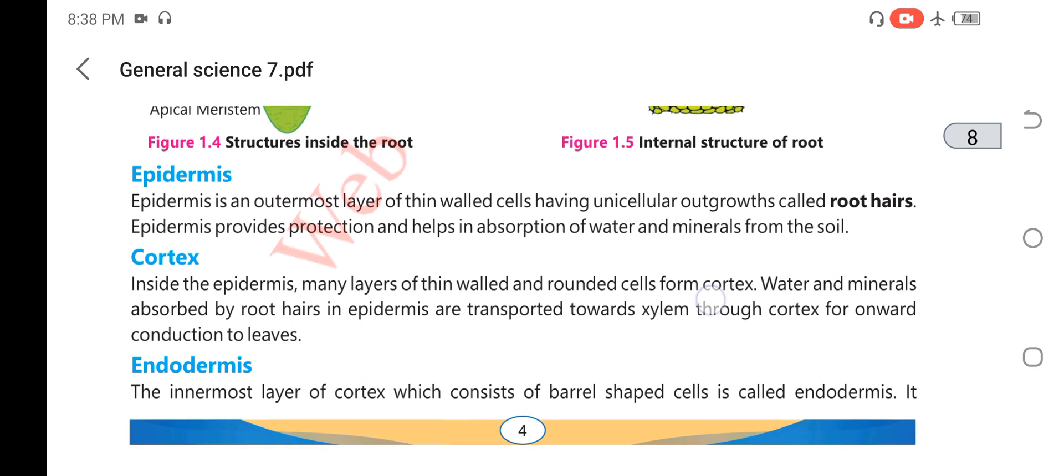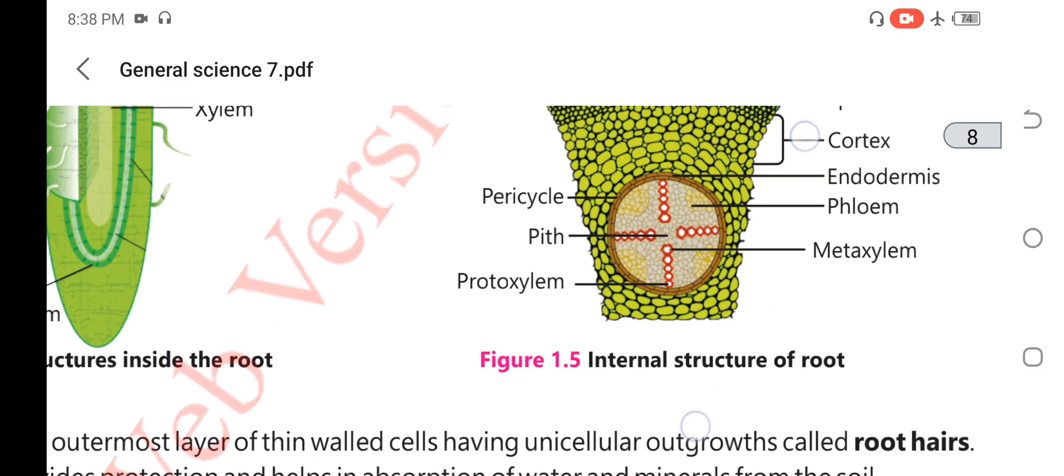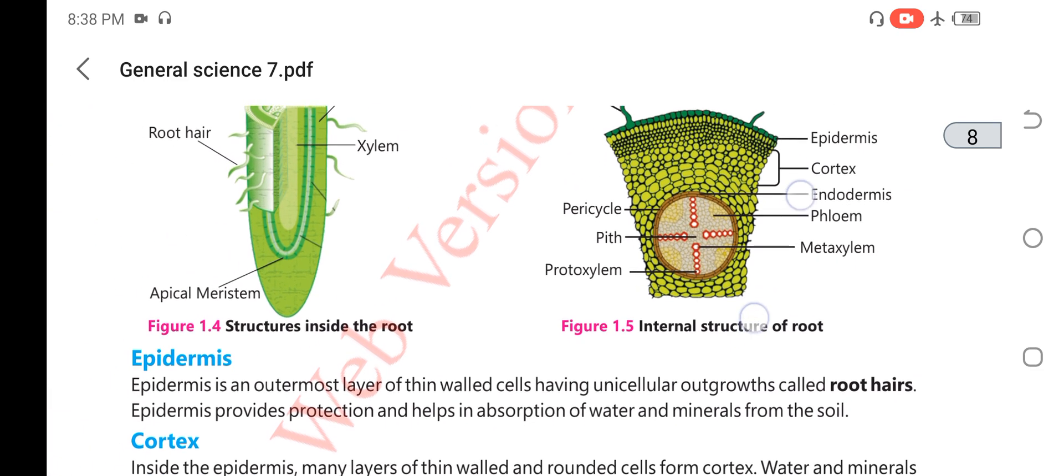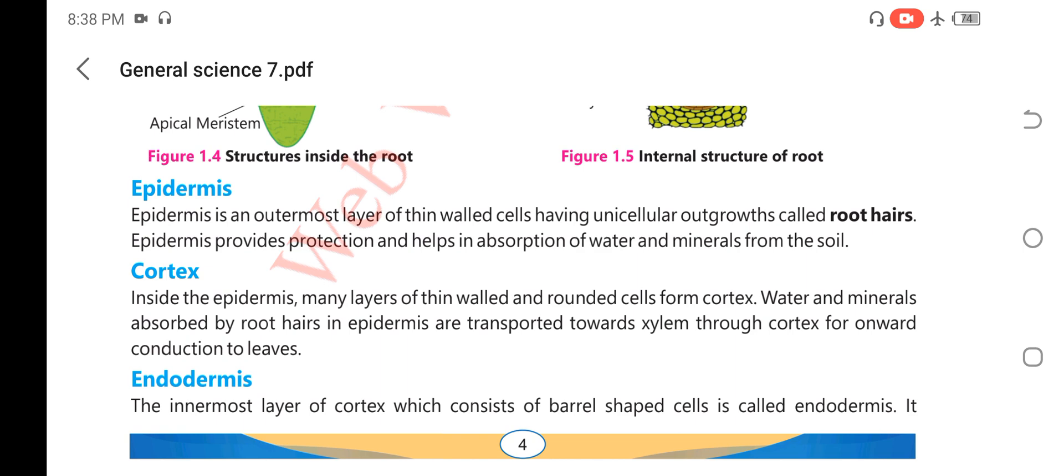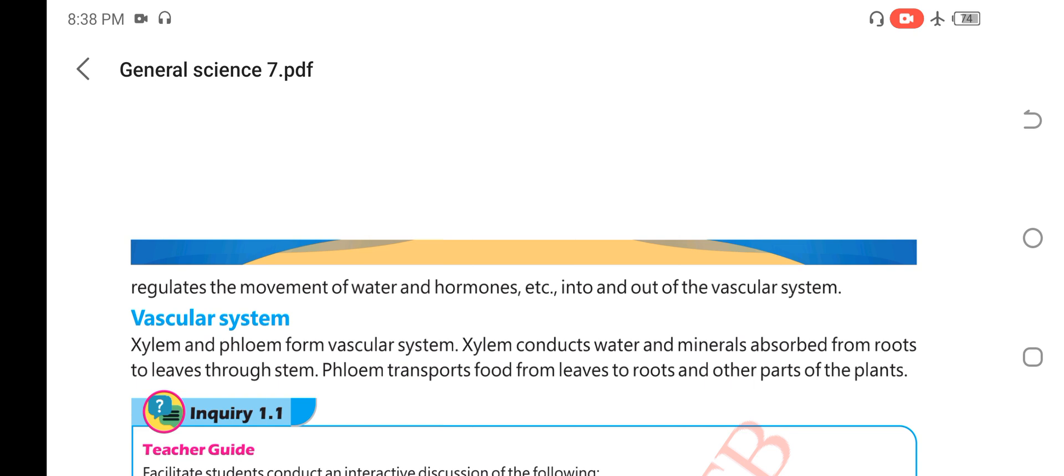Next is the endodermis. This is the endodermis that consists of barrel-shaped cells. It regulates the movement of water and hormones in and out of the vascular system.